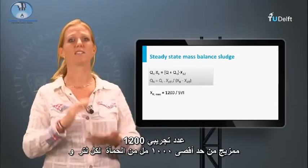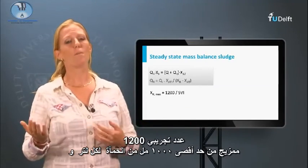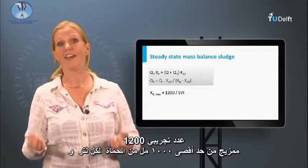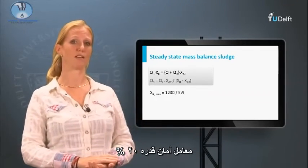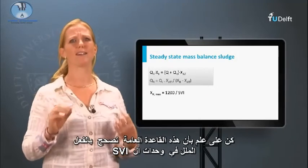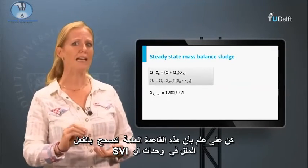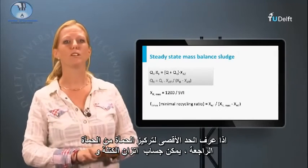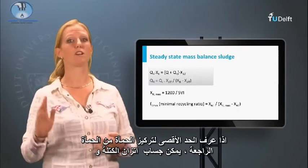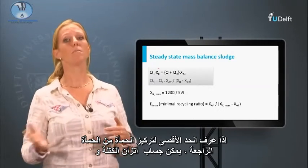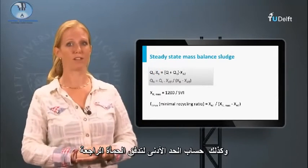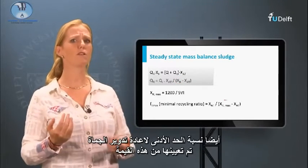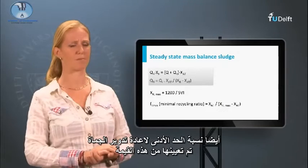1200 is an empirical number, a combination of a maximum of 1000 milliliters sludge per liter and a safety factor of 20 percent. Be aware that this rule of thumb already corrects for the milliliters in the SVI unit. If a maximum sludge concentration of the sludge recycle is found, the mass balance and the minimum return sludge flow can be calculated. Also the minimum recycle ratio is set by this value.